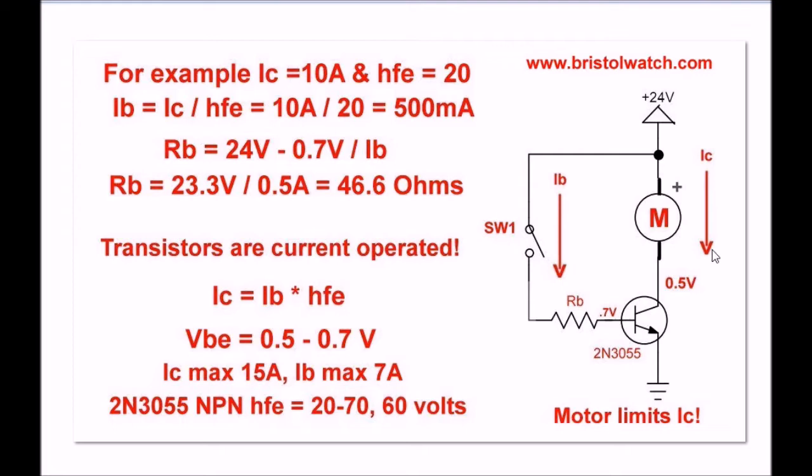Let's do a little math. 10 amp IC. To get IB, I'm going to have to divide IC, my collector current, by HFE. So, I have 10 amps divided by 20. That's 500 milliamps. So, I'm going to assume an IB, or base current, of 500 milliamps.